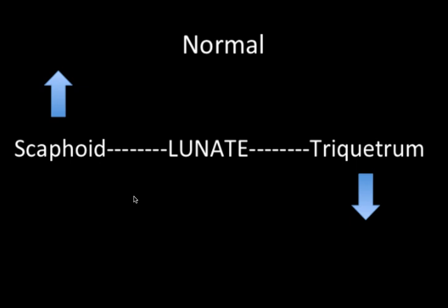VISI, for those of you that are not familiar, stands for volar intercalated segment instability, while DISI stands for dorsal intercalated segment instability. The way I see it is you're going to see it in relation to the lunate.